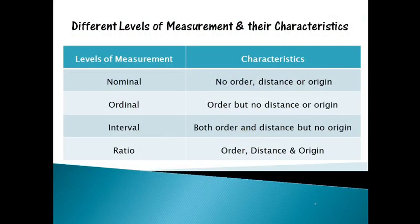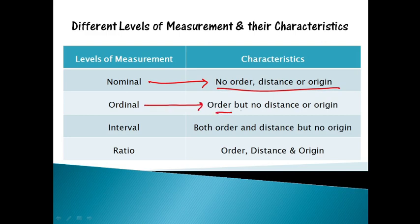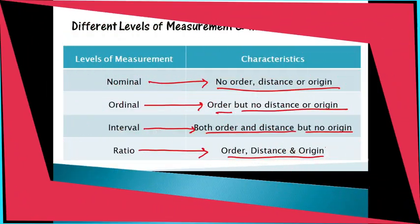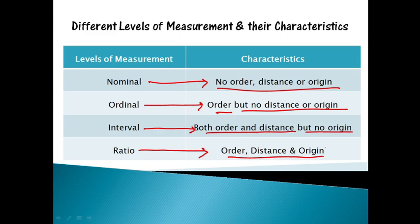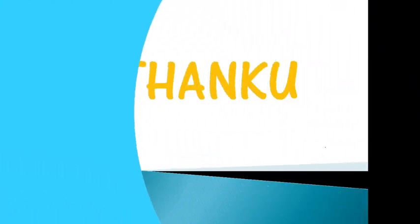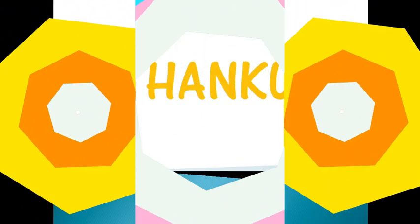Regarding different levels of measurement and their characteristics: in the nominal level there is no order, distance, or origin. Ordinal has order, but no distance or origin. Interval has order and distance, but no origin. Ratio, being the fourth level of measurement, has order, distance, and origin. Kindly like, share, and subscribe to the channel. All the best to all of you. Thank you.